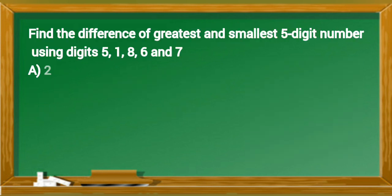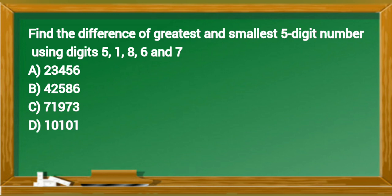Find the difference of greatest and smallest five-digit number using digits 5, 1, 8, 6 and 7.